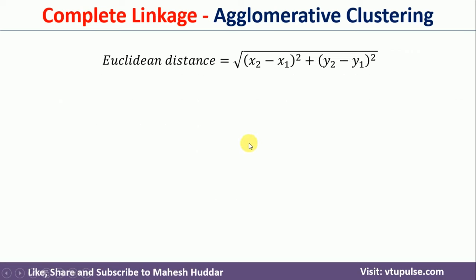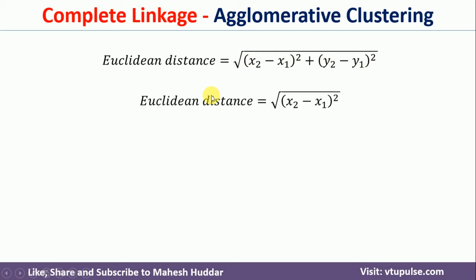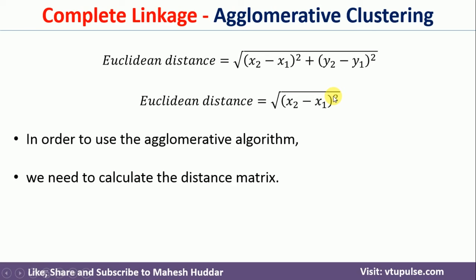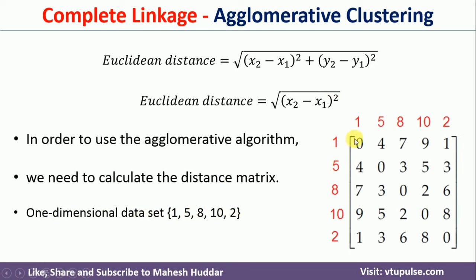To apply the Agglomerative Hierarchical Clustering Algorithm, the first thing required is to identify the distance between data points using the Euclidean distance formula. Assuming two points P1 containing (x1, y1) and P2 containing (x2, y2), the distance is the square root of (x2 minus x1) squared plus (y2 minus y1) squared. Since we have a one-dimensional dataset, the Euclidean distance simplifies to the square root of (x2 minus x1) squared. I will write the actual data values on the column and row headers to calculate these distances.